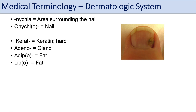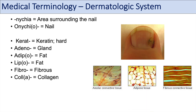Other terms to describe the skin include fibro, which literally means fibrous tissue. Another one is col or cola, referring to collagen. The prefix pyo refers to pus — we talked about pyoderma, meaning pus in the skin. We can also see the prefix sebo, which refers to sebum.